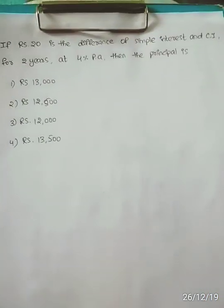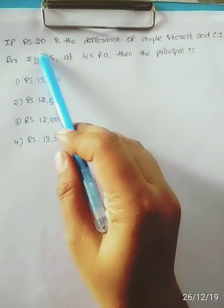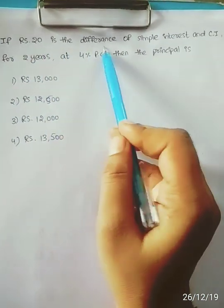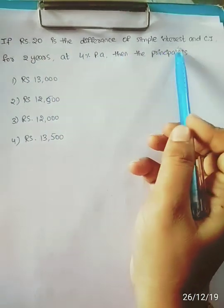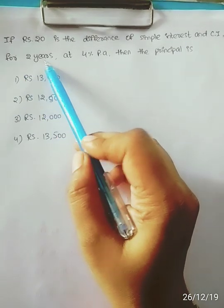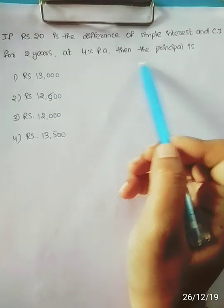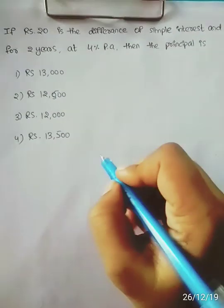Next question: if Rs. 20 is the difference of Simple and Compound Interest for two years at 4% per annum, then what is the principal?